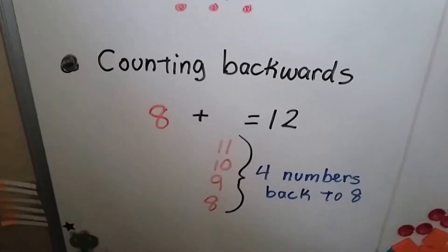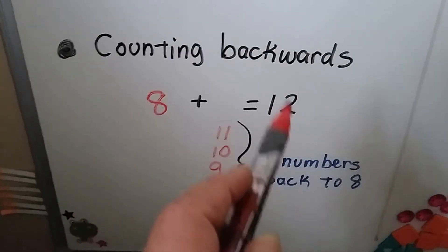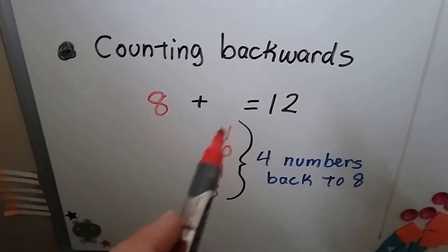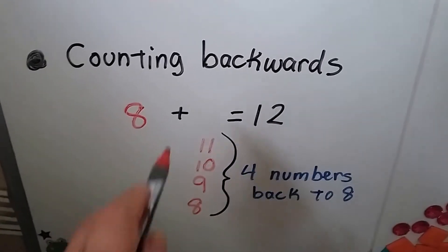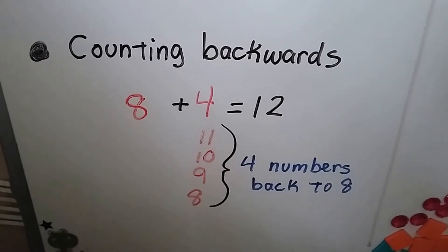We can also try counting backwards. If we have 8 plus some number equals 12, we start at the 12 and we count back to the 8. 11, 10, 9, 8. It took 4 numbers to go back. So that's 8 plus 4.